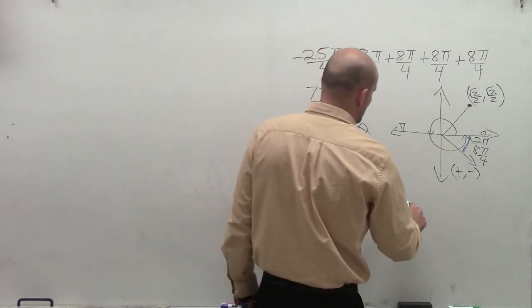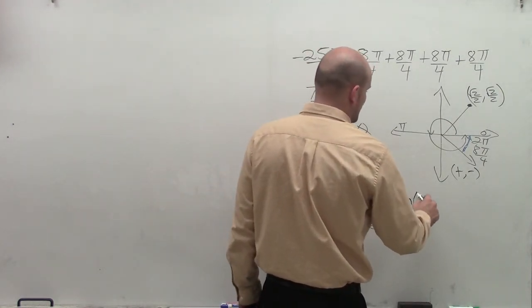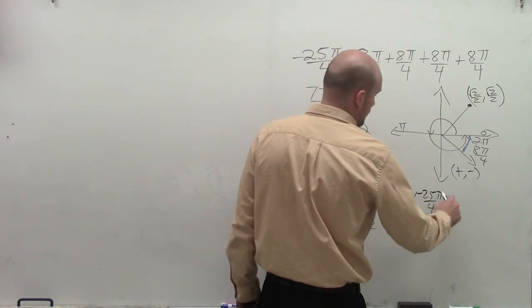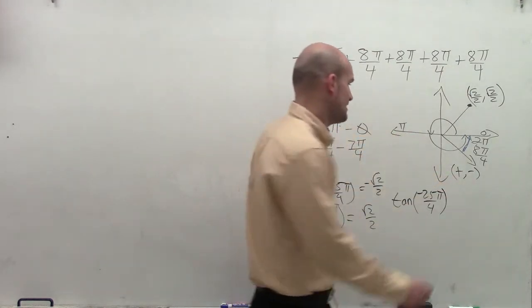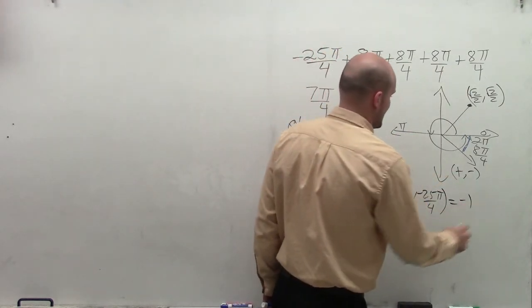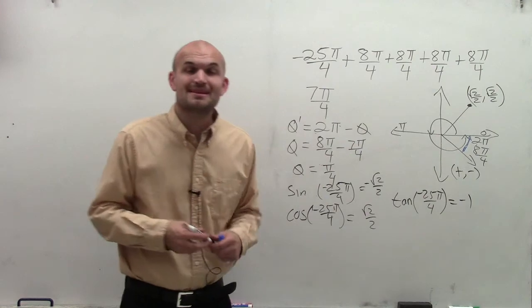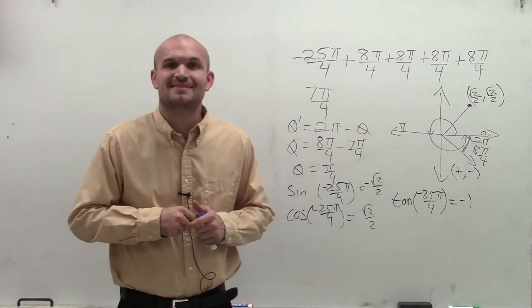Then last but not least, I'm going to use the tangent of negative 25 pi over 4. The tangent represents the y over the x. But since the y is negative, that is going to leave me with negative 1. So there you go, ladies and gentlemen. That's how you evaluate for the sine, cosine, and tangent. Thanks.